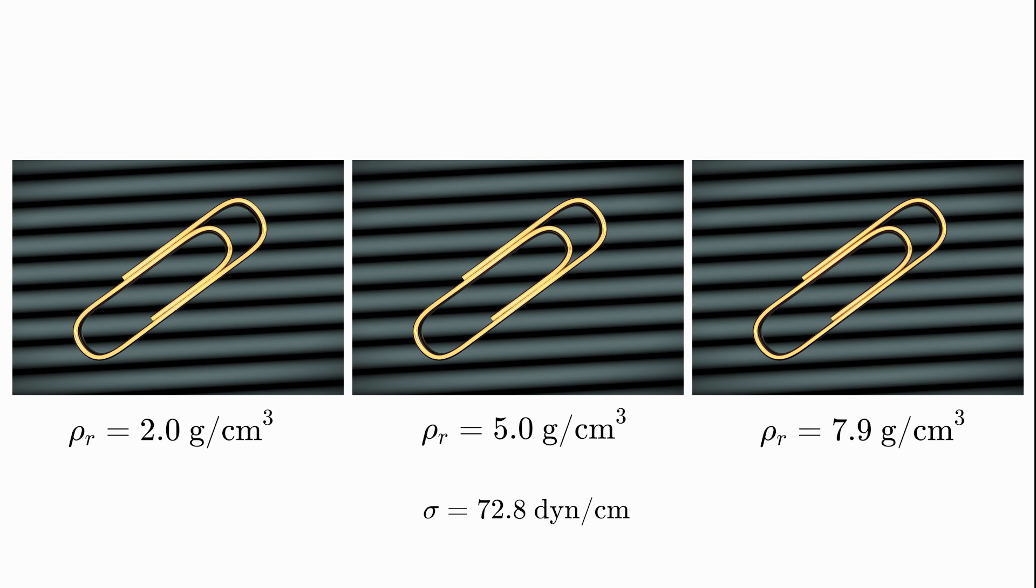In this example, paper clips with increasingly higher density than that of water keep afloat on the surface of the water.